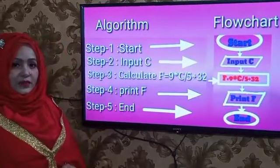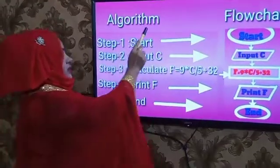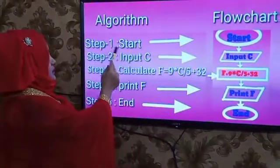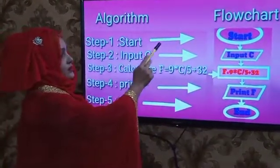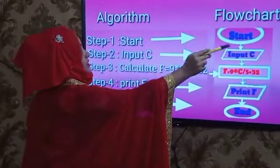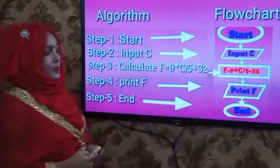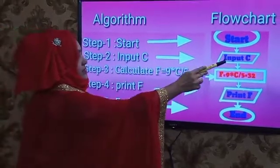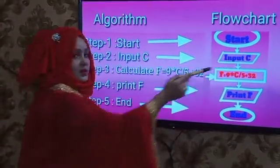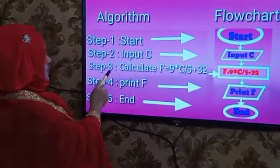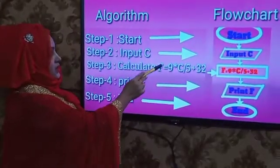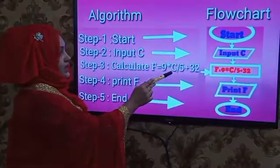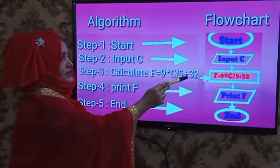Now we can see the relationship between algorithm and flowchart. Step 1: Start — we write an oval shape with 'Start'. Step 2: Input C — we write a parallelogram with 'Input C'. Step 3: Calculate F — F equals 9 into C divided by 5, plus 32.